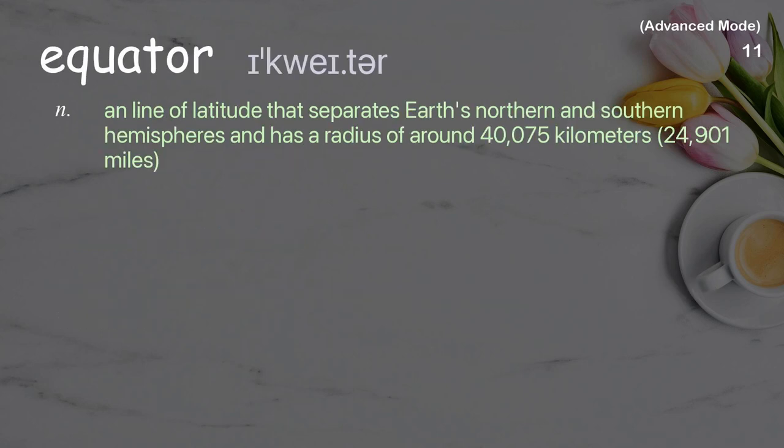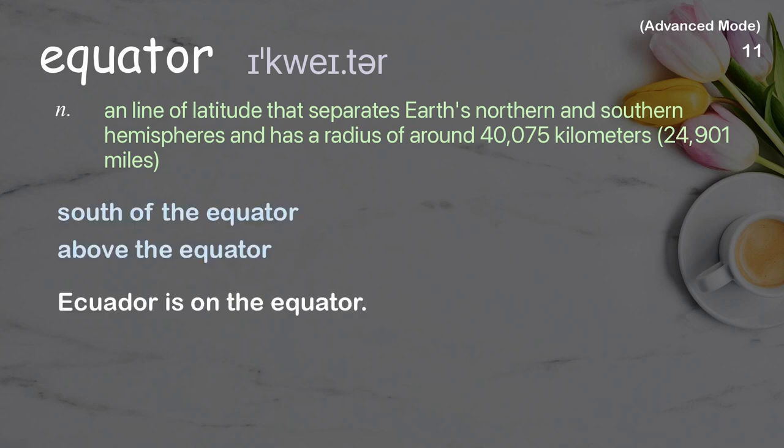Equator: A line of latitude that separates Earth's northern and southern hemispheres and has a radius of around 40,075 kilometers, or 24,901 miles. Examples: south of the equator, above the equator. Ecuador is on the equator.